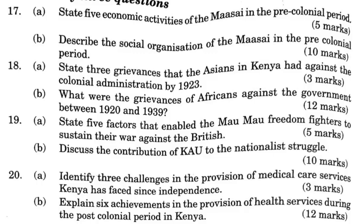Two, the government had alienated African land and given it to settlers, and the land issue continued well into the 1930s. For example, after the discovery of gold in Kakamega, many Africans were displaced to enable the colonialists to exploit the mineral resources there.